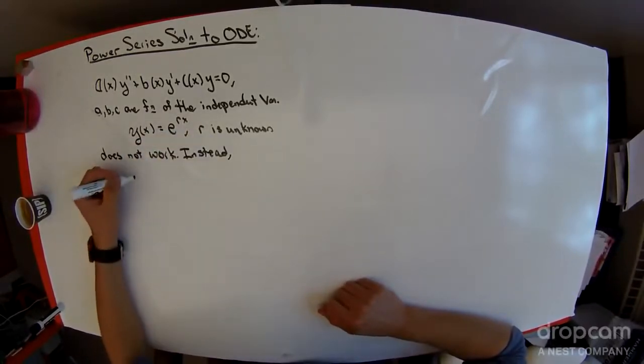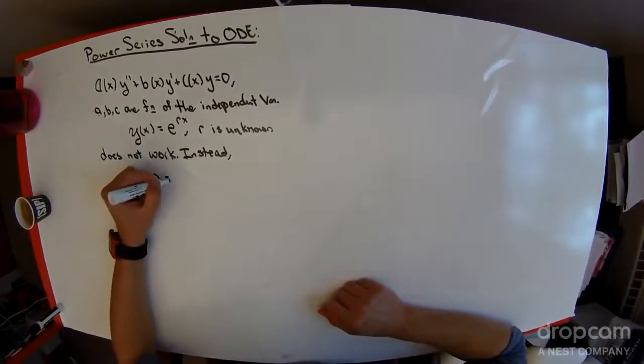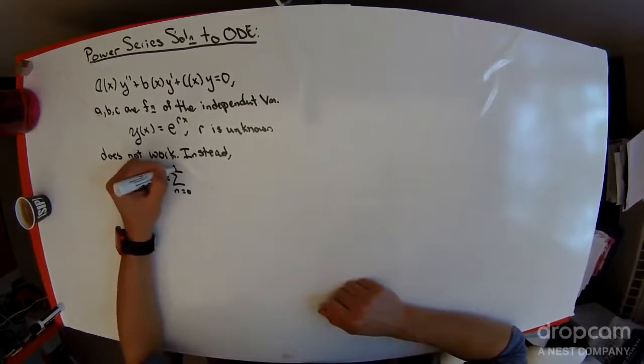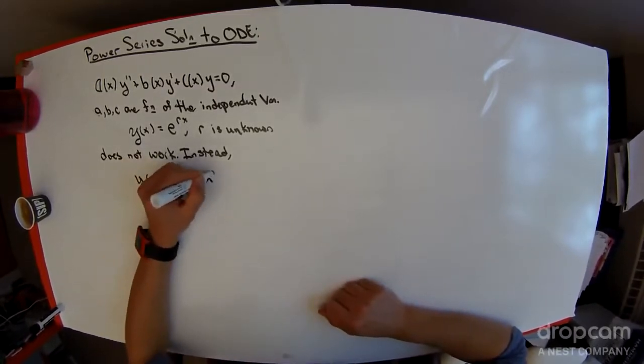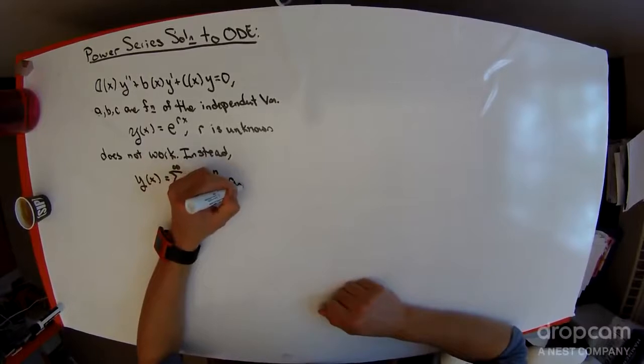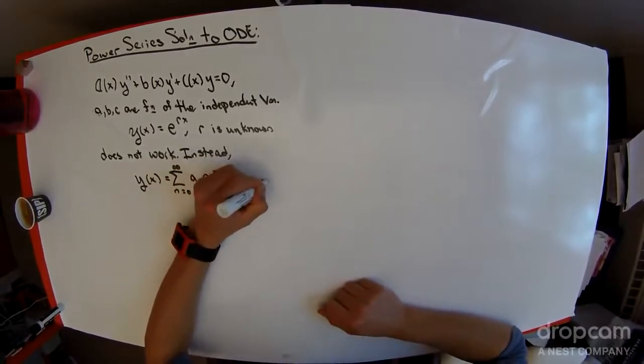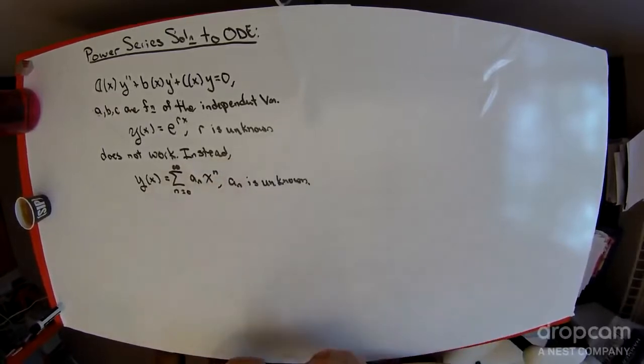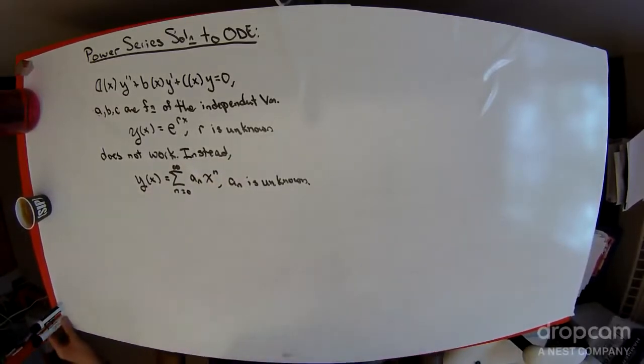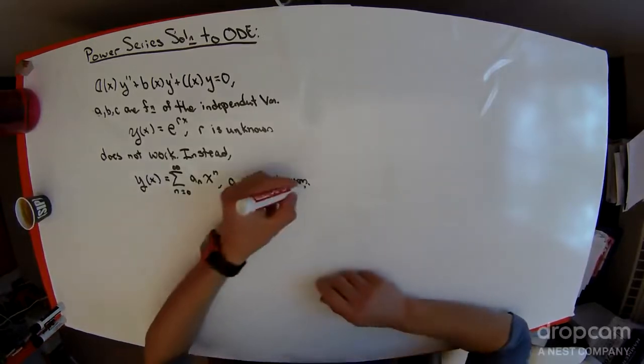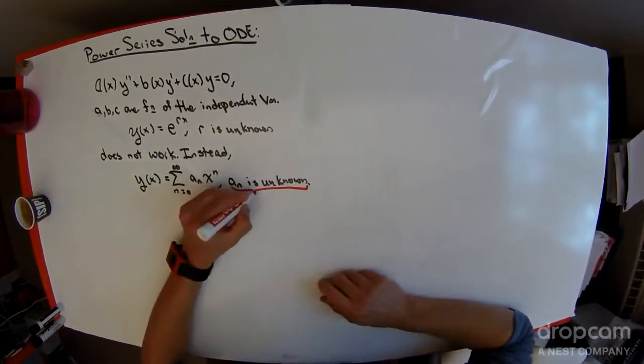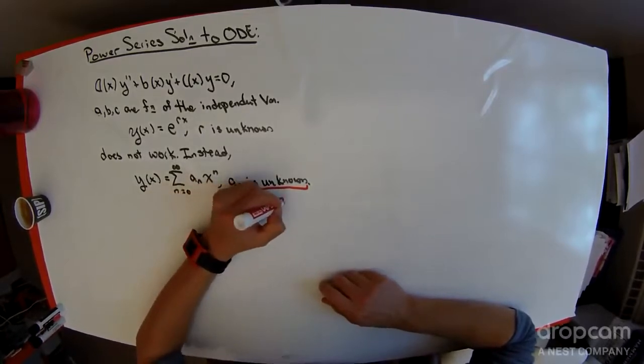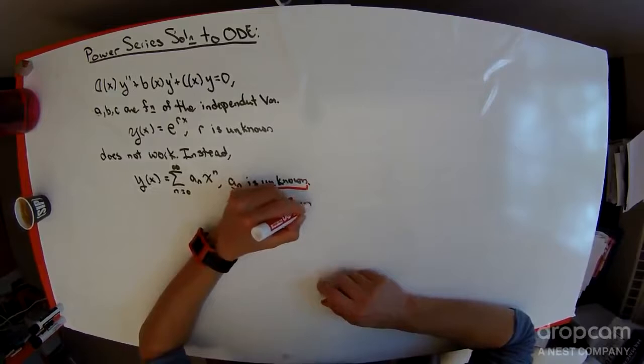Instead, we consider y of x is equal to the sum n equals 0 to infinity of a sub n, x to the n, where the a sub n is unknown. What's important here is that this a sub n is unknown for n equal 1, 2, 3, and so on.